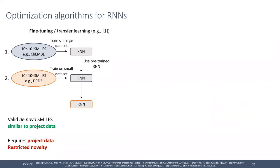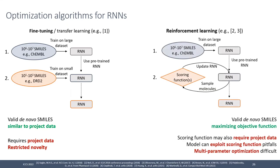Once you train an RNN, you can sample a distribution similar to your training data — but actually you want to optimize towards some objective. Two common ways: fine-tuning or transfer learning, where you pre-train an RNN on a large dataset like ChEMBL with millions of bioactive molecules, then fine-tune on a much smaller project-relevant dataset — sometimes even 10 or 20 molecules. The caveat is that you require that project data in the first instance, and in a lot of drug design contexts you don't have it.